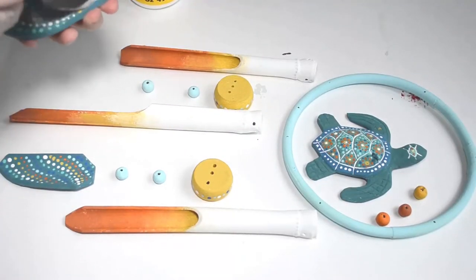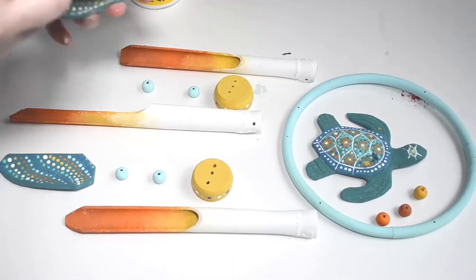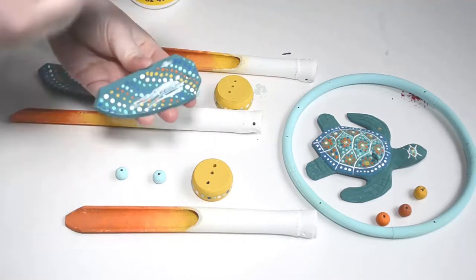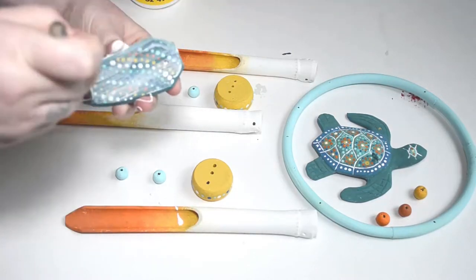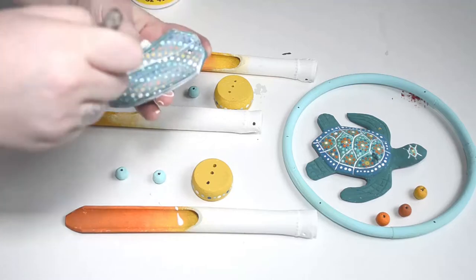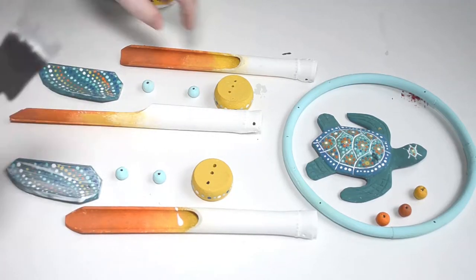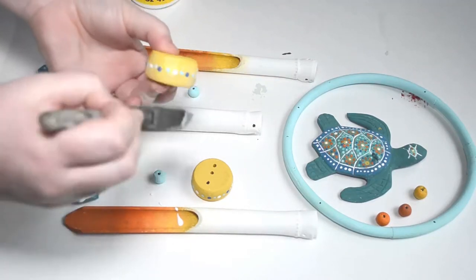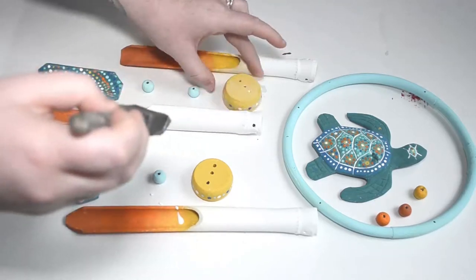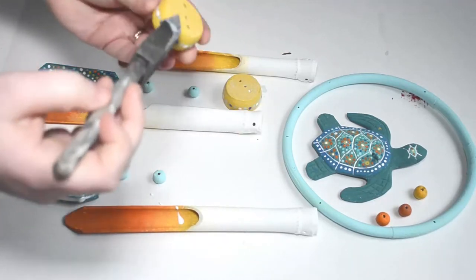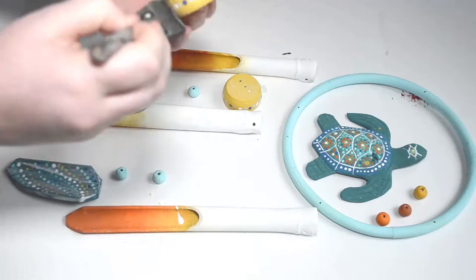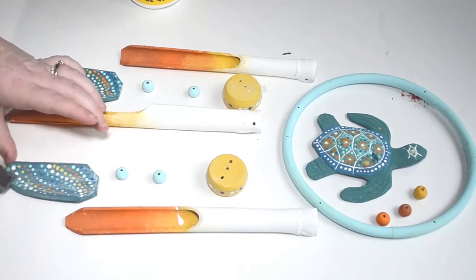Then I took some Mod Podge and sealed everything because if this is going to go outside I wanted it to be weatherproof. I wanted to just seal in the paint and the design. I didn't want it to chip or anything to happen to it. The Mod Podge sealed everything in so that it's perfect for the outdoors and any other catastrophes that could happen for the paint to chip.